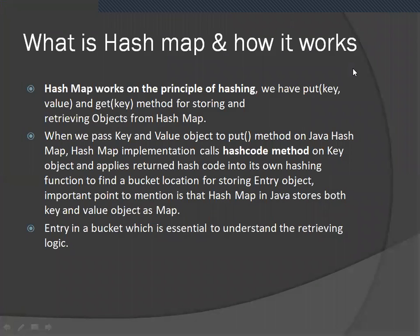What is HashMap and how it works? You have to explain the principle of hashing. We have put and get key methods for storing and retrieving objects — put is for storing and get is for retrieving. When we pass the key and value object to the put method on a Java HashMap, the HashMap implementation calls the hashCode method. HashMap in Java stores both key and value objects as a map entry, which is stored in a bucket — this is essential to understand the retrieving logic.